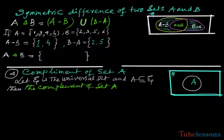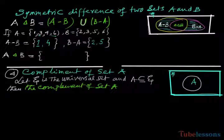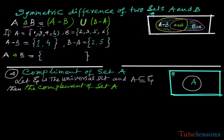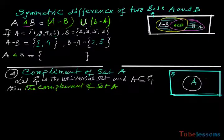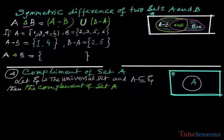Now, the symmetric difference of two sets A and B is denoted by delta. Symmetric difference means it is the union of A minus B and B minus A.